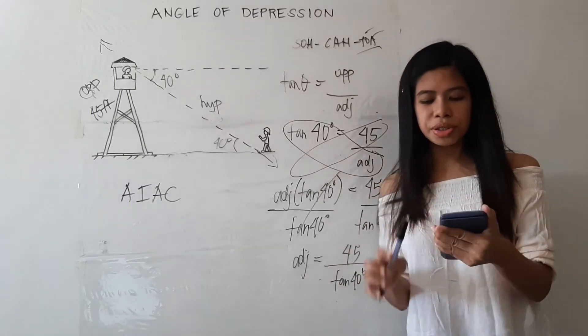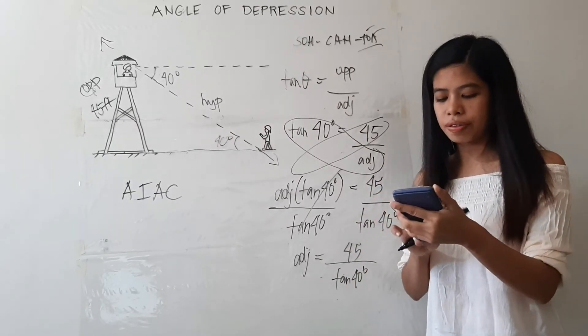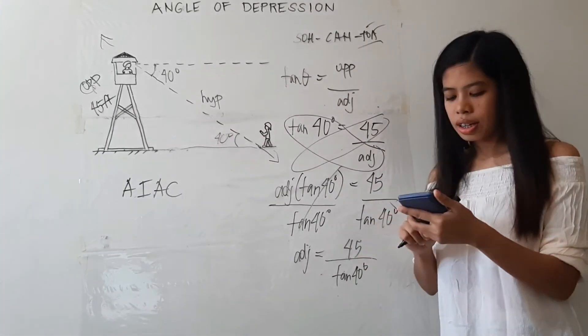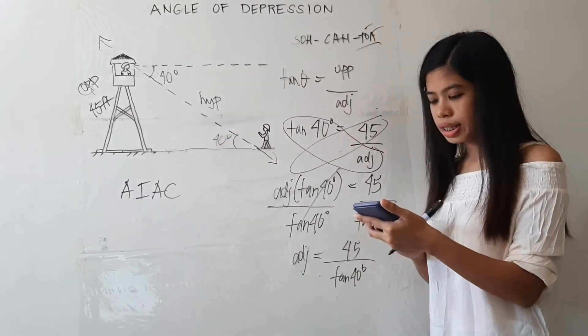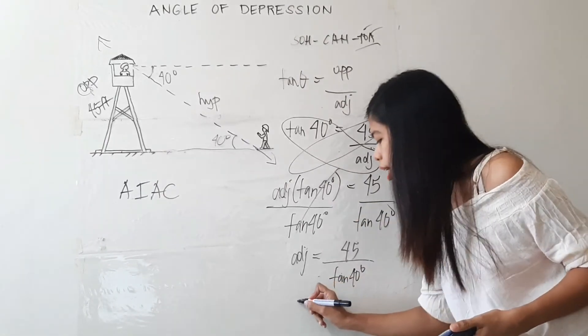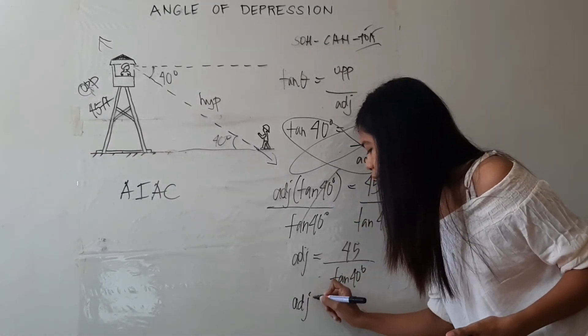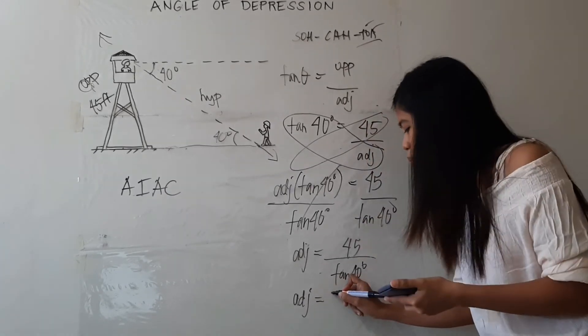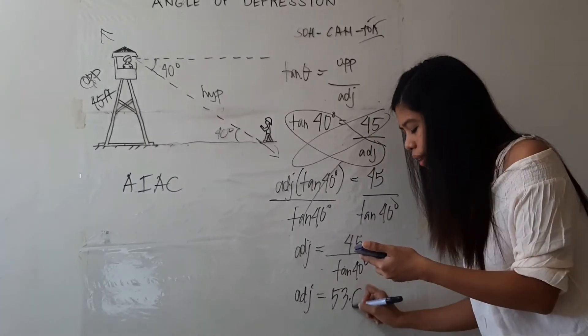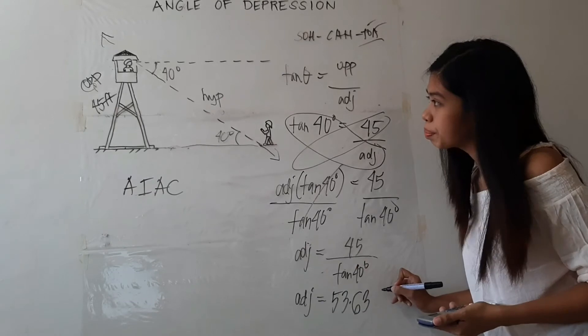Using your calculators, you just have to press 45 divided by tangent 40 degrees. So you are going to get, again, round your answer to the nearest hundredths or two decimal places. That would be 53.63 feet.